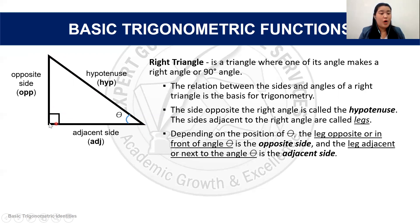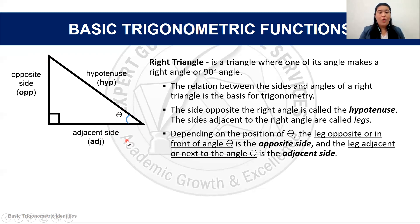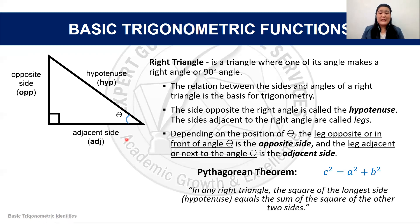Now, depending on the position of the angle or theta, the leg opposite this angle — or in front of it — is known as the opposite side. But the leg that is right next to this angle, or adjacent to this angle, is known as the adjacent side. One way that we can solve for the lengths of the sides of our right triangle is through the Pythagorean theorem.